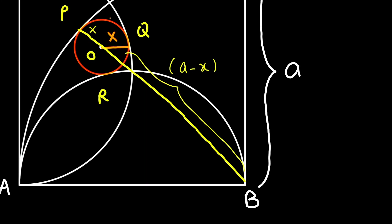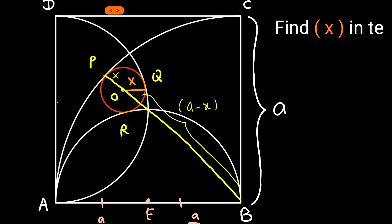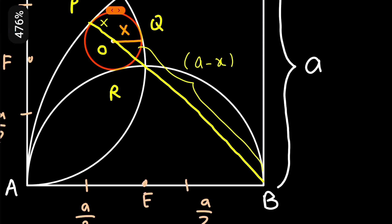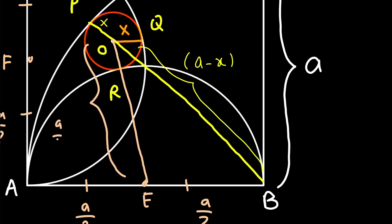The orange circle is tangent to the semicircle externally. Therefore, points O, R, and E (center of that semicircle) are collinear. AB was the diameter of the semicircle with center E, so EB = EA = radius = A/2. Similarly, marking the center of the other semicircle as point F, FD = FA = A/2. Since the circle is tangent to semicircle E externally, the distance OR = X and RE = A/2, so the complete distance OE = A/2 + X.